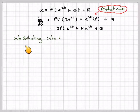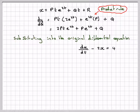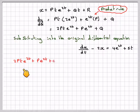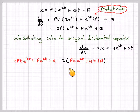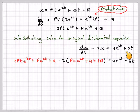Now we need to substitute both this and this back into the original differential equation, which is dx/dt minus 2x is equal to 4e to the 2t plus 5t. So we take 2pt e to the 2t plus p e to the 2t plus q, minus 2 times pte to the 2t plus qt plus r. Be careful to select the right one. It's equal to the right-hand side, which is 4e to the 2t plus 5t.